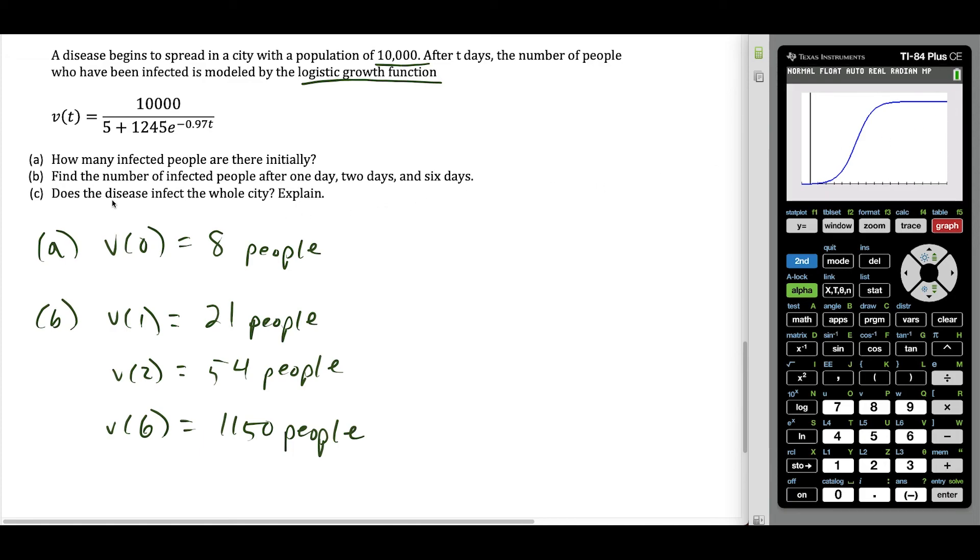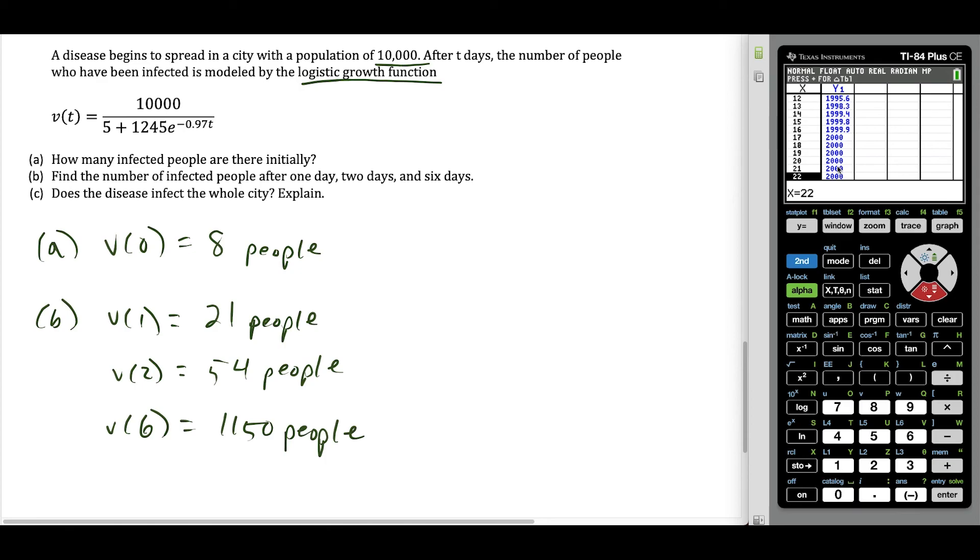And now the last question is, does the disease infect the whole city? Well, if we look at our table of values again, remember the disease capped off at about 2,000 people. And if there's 10,000 people in the whole city, no, the disease did not infect the whole city. So in this case, we're not actually asked to find a graph of this function, but we could utilize the graph here and see that 2,000 is the maximum value here. So starting at 8 people, we could see this logistic growth curve is capping out at about 2,000. So for part C, no, the disease does not infect the whole city. The maximum value is 2,000.